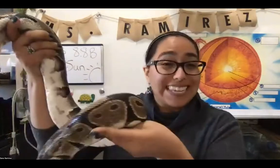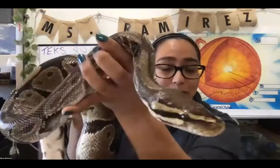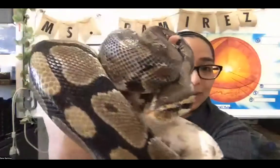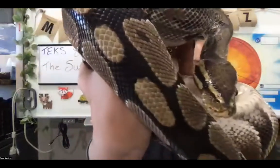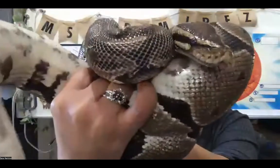Hello, my name is Ms. Ramirez, and in this segment we're going to be learning about the sun. I want to show you an animal friend, because without the sun, we wouldn't have life on Earth. We are located in just the right spot so the sun provides us with the heat, light, and solar energy we need. This is Palota, a ball python. The sun is very important for her because without it, she couldn't maintain her body temperature. Reptiles are cold-blooded or ectothermic, so they depend on outside temperature and need the sun to stay warm.